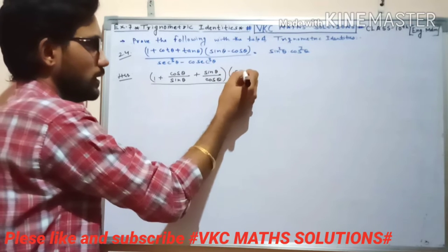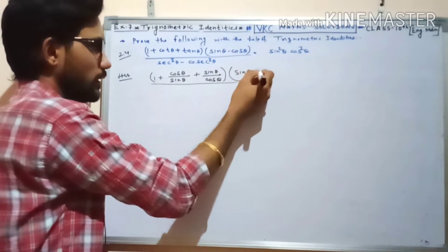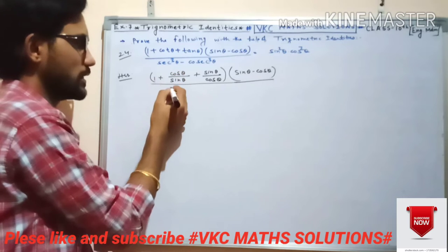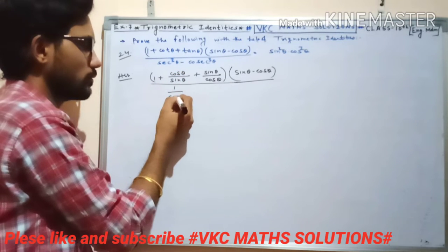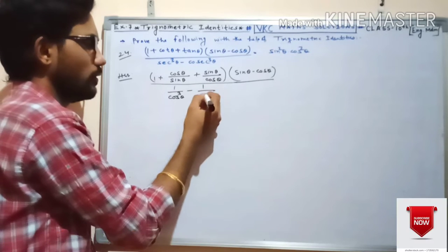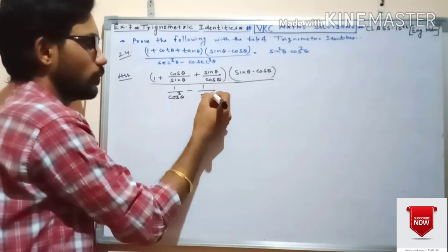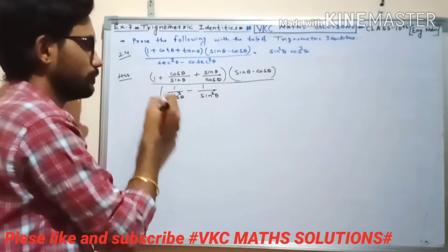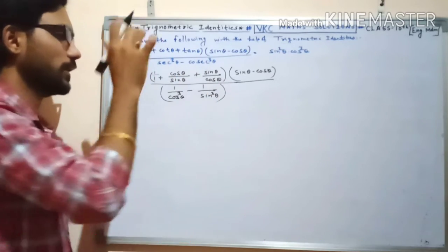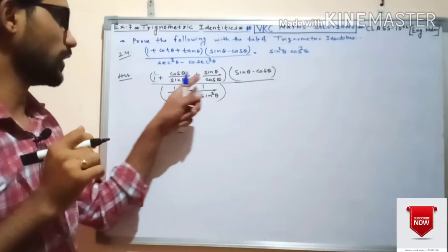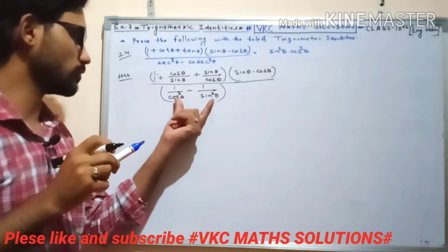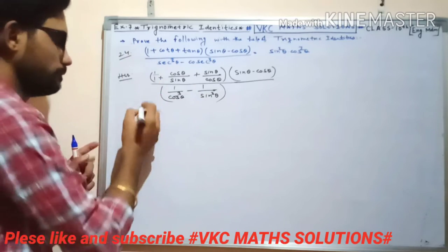In the numerator we write: 1 + cosθ/sinθ + sinθ/cosθ, all multiplied by (sinθ − cosθ). In the denominator, sec = 1/cosθ (cubed) minus cosec = 1/sinθ (cubed). Taking LCM in both the numerator bracket and the denominator, the LCM is sinθ · cosθ.